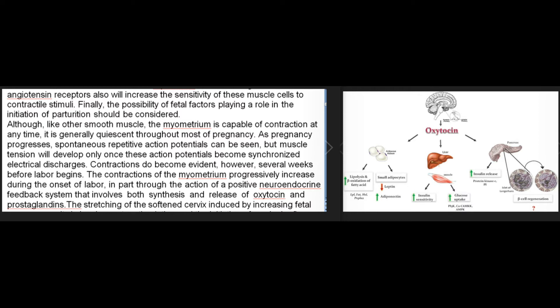The possibility of fetal factors playing a role in the initiation of parturition should also be considered. Although, like other smooth muscle, the myometrium is capable of contraction at any time, it is generally quiescent throughout most of pregnancy. As pregnancy progresses, spontaneous repetitive action potentials can be seen, but muscle tension will develop only once these action potentials become synchronized electrical discharges. Contractions become evident several weeks before labor begins, progressively increasing during the onset of labor.